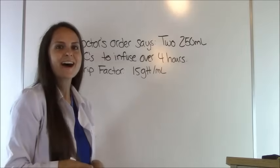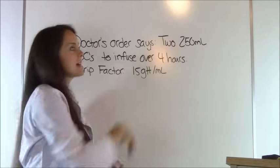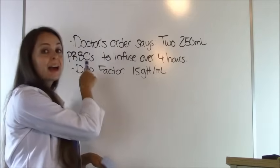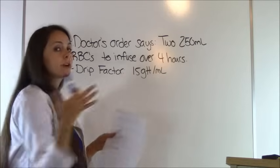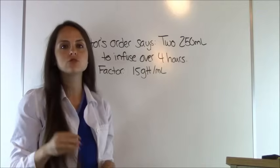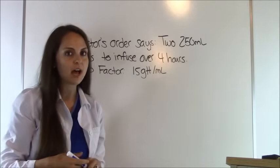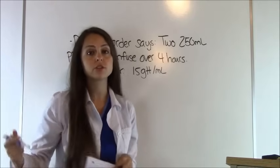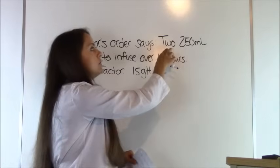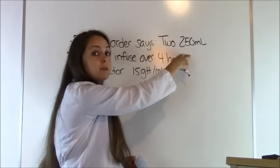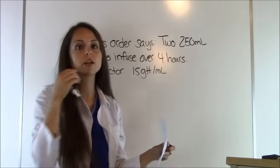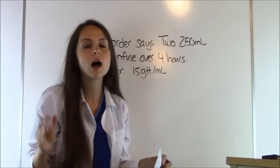Let's do the next one. We're going to infuse a pack of red blood cells — that's what PRBCs means — over 4 hours with a drip factor of 15 drops per milliliter. You've really got to pay attention when reading: it says we're infusing two 250-milliliter bags, so we're infusing a total of 500 milliliters.